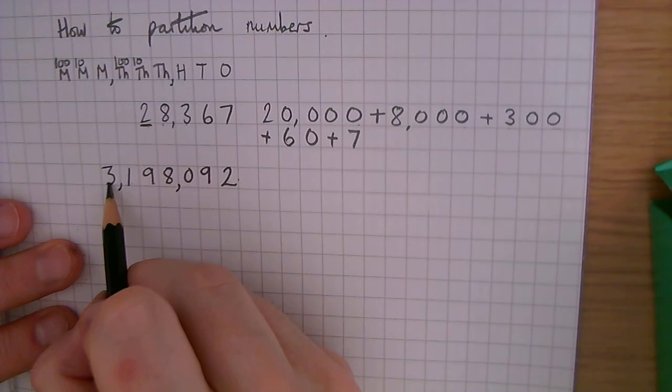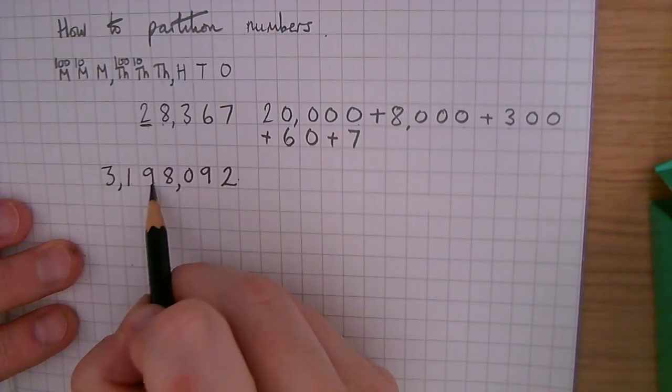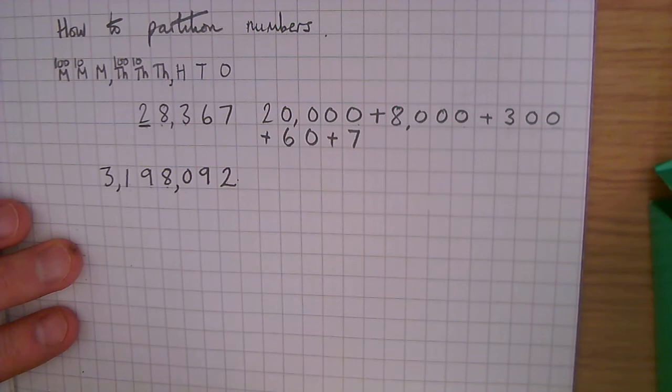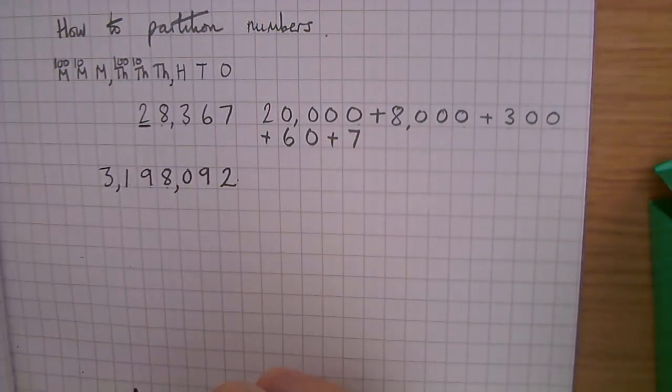We've got three million, one hundred ninety-eight thousand, and ninety-two. So we're going to write down the value of each digit.